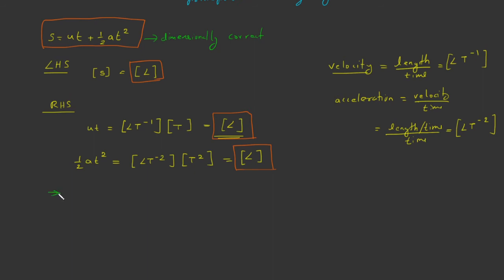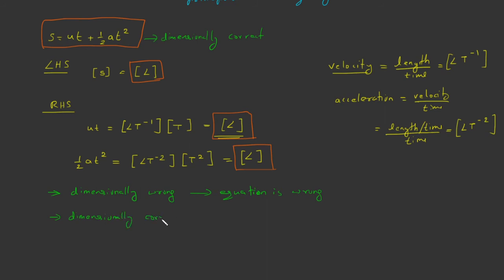Remember that if an equation fails this test — that is, if it is dimensionally wrong — then that equation is definitely wrong. Every correct equation must be dimensionally correct. But that doesn't mean every dimensionally correct equation is correct. If an equation is dimensionally correct, the equation may or may not be correct — it could still be wrong even though it is dimensionally correct.